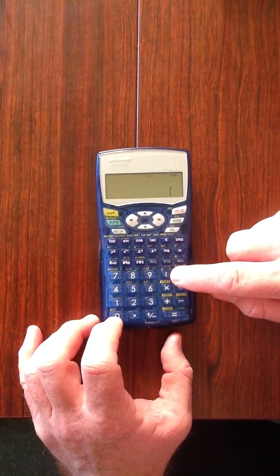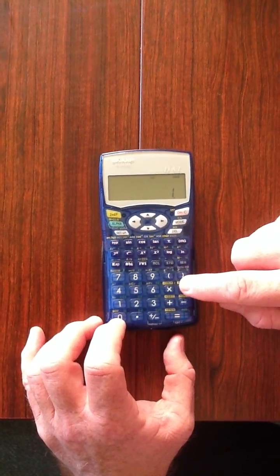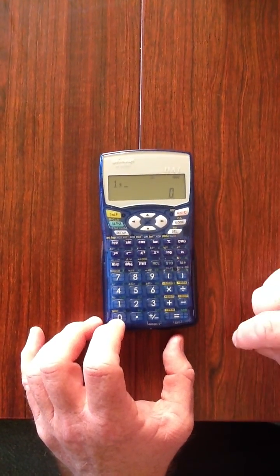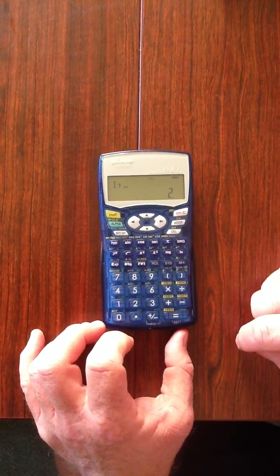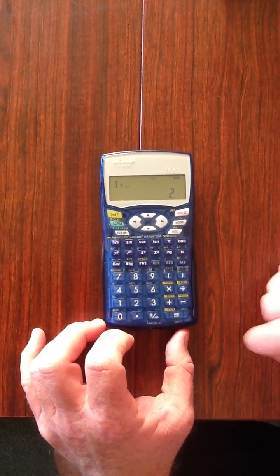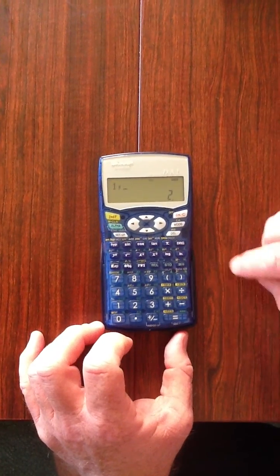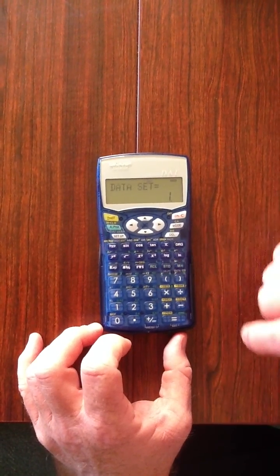what we're actually pressing is the XY. Okay so we are pressing one and then we are pressing two, so this represents two scores of one. We now press our data button.